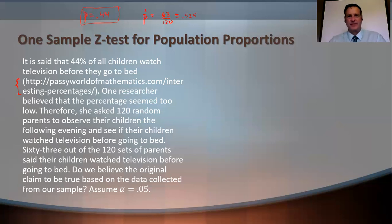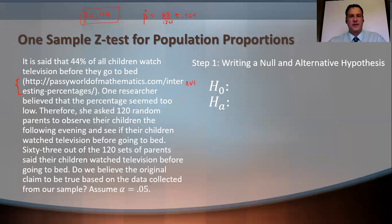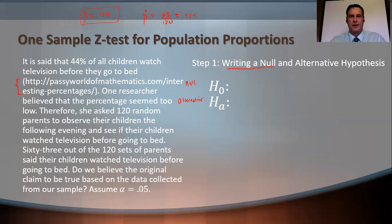We have five steps. The first is new to us — it's what we learned in 9.1 — and that is to write a null and alternative hypothesis. H sub 0 is your null, and H sub A is the alternative. The null hypothesis is the original claim, what's supposed to be true. I'm going to define the population parameter using P equals 0.44. P is the proportion of all children who watch TV before they go to bed, and it was believed to be 0.44.